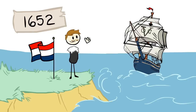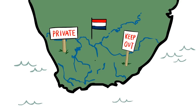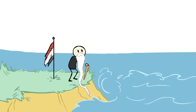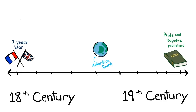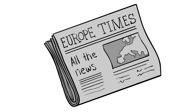You see, back in 1652, the Dutch, under the Dutch East India Company, first settled Cape Town and sort of lay claim to South Africa. But that was about 150 years before our story started — we're looking at the late 18th and early 19th century here.